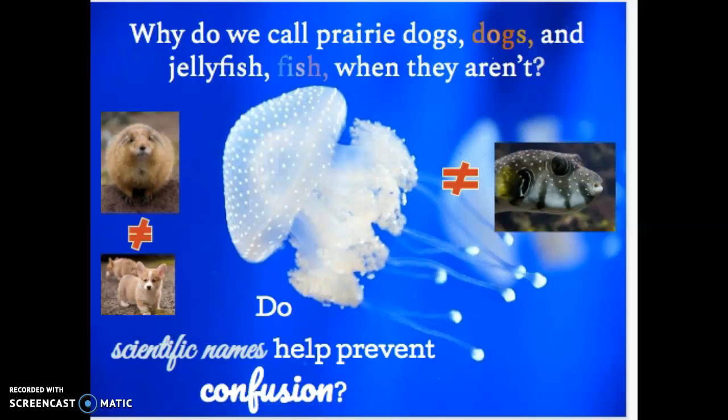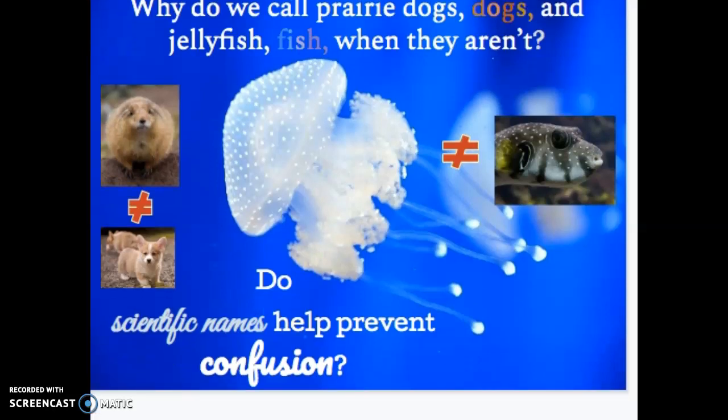As you can see, using an organism's unique scientific name helps scientists to be sure they're talking about the same organism. And yes, tiny baby corgi dogs are not tiny baby groundhogs.